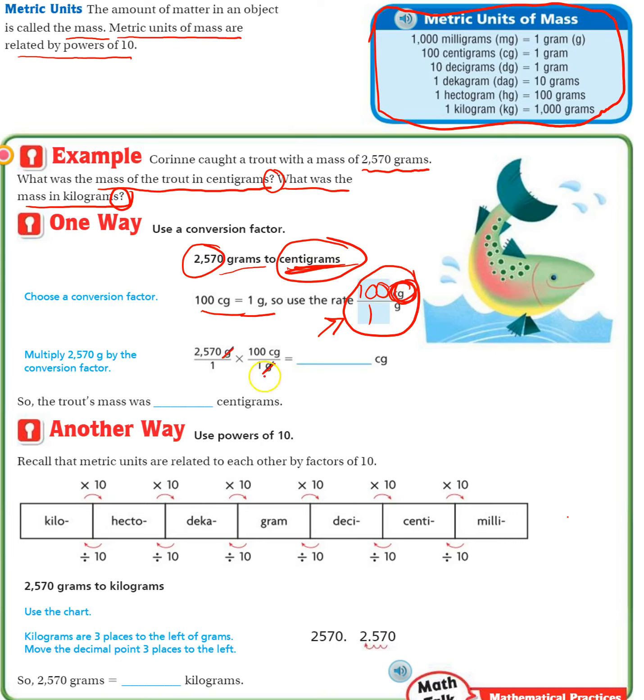Now we can just multiply straight across. What we're left with is 1 times 1 is just 1 on the bottom. Any fraction that has 1 on the bottom, the numerator is just the answer, the whole number. So really, we just need to find 2,570 times 100.